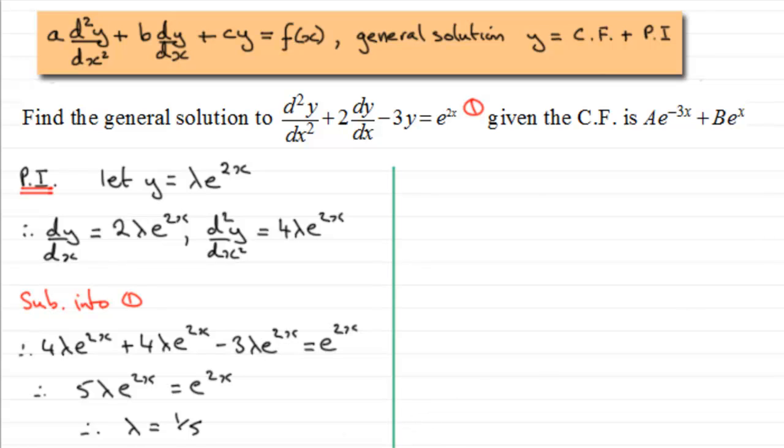Having got that, we're now in a position to say what our particular integral is. A particular integral, for this equation anyway, is going to be lambda e to the 2x. Lambda is a fifth, so it's going to be 1 fifth e to the power 2x.